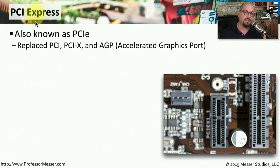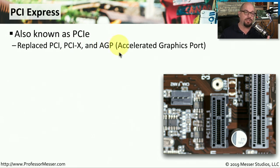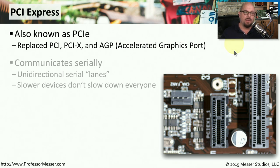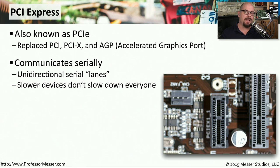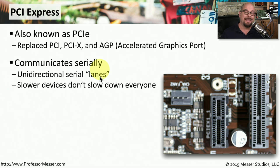Instead, on most modern motherboards you'll see the newer PCI Express, sometimes abbreviated as PCIe. PCI Express has effectively replaced all of the older expansion slot types — not just PCI, but also PCI-X and AGP, the older accelerated graphics port. One big change with PCI Express is that it communicates over a serial connection, sometimes referred to as serial lanes of communication. Another advantage is that not all devices share these lanes, giving us much more efficient communication when we have more than one interface card in our computer.